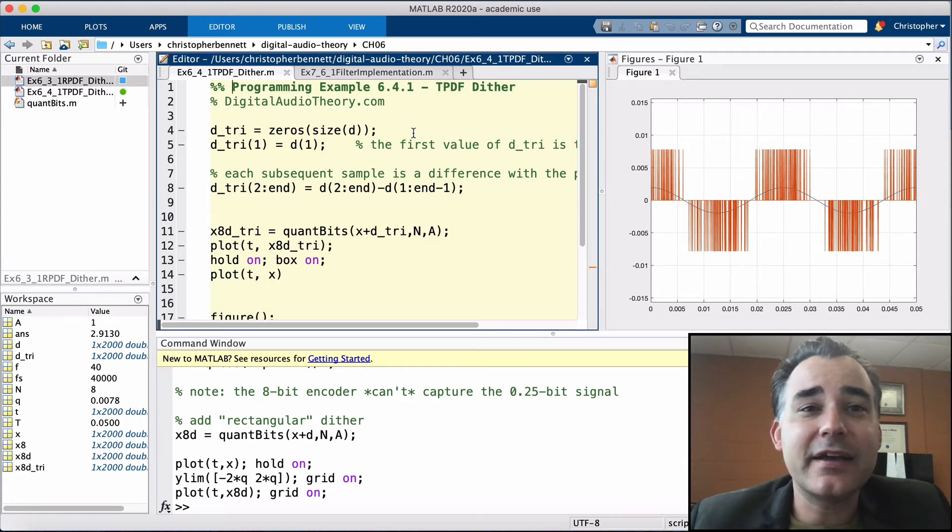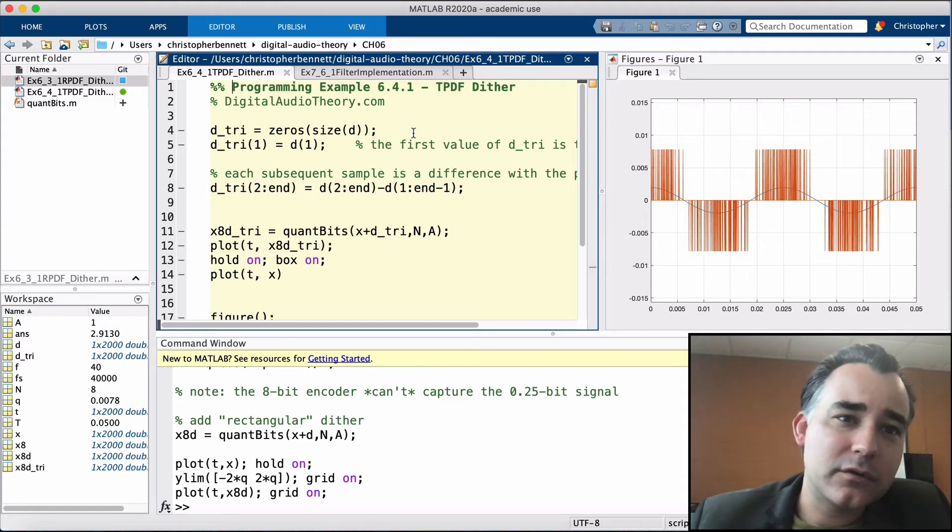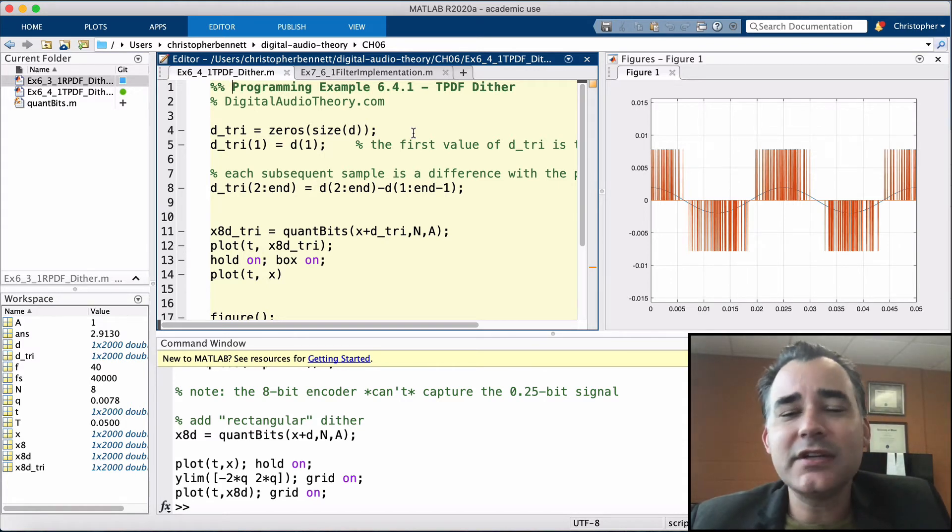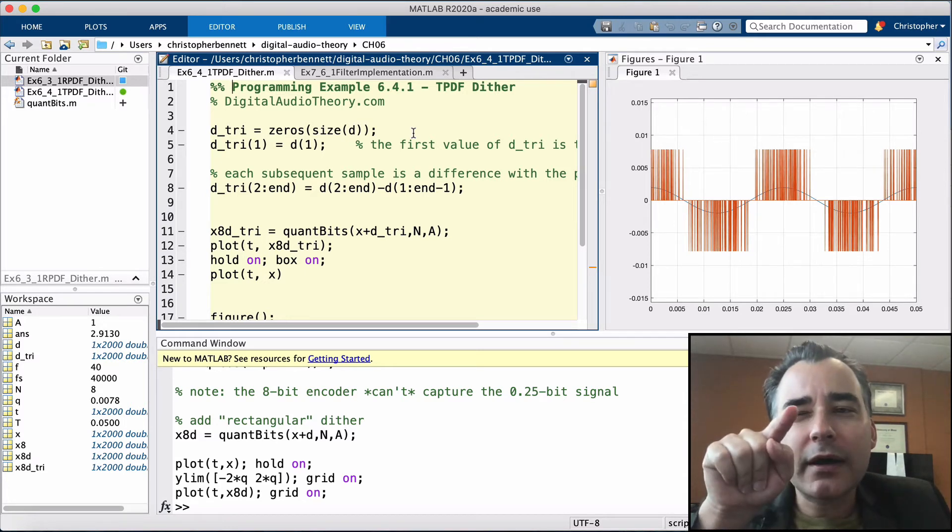The generation of TPDF dither uses a process known as backwards differencing. Conceptually, a backwards differencing algorithm accentuates or enhances the changes from one value to the next and diminishes any constant values from one moment to the next. So imagine the signal that changes only from 0.9 to 0.95. Large values, but when they're differenced, we're left with a small value, 0.05.